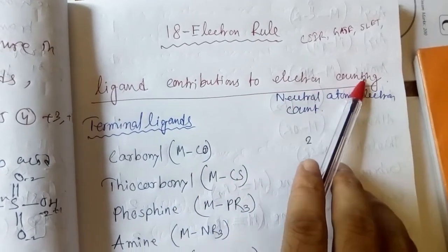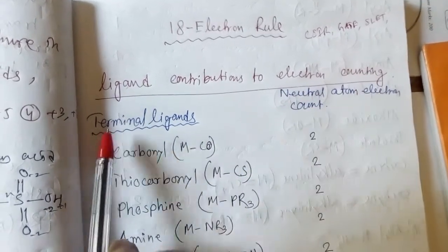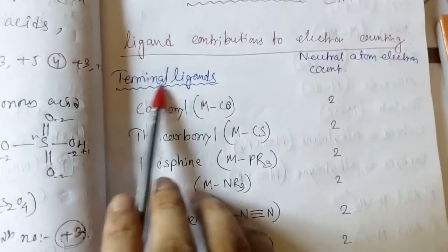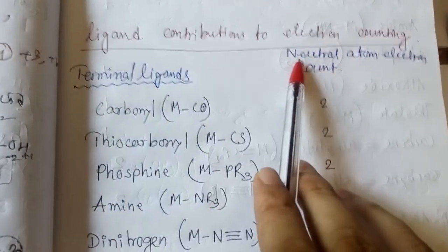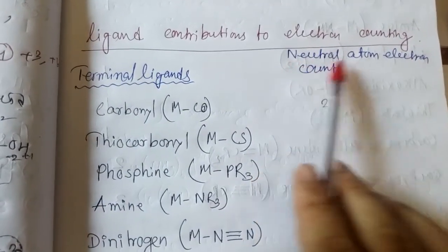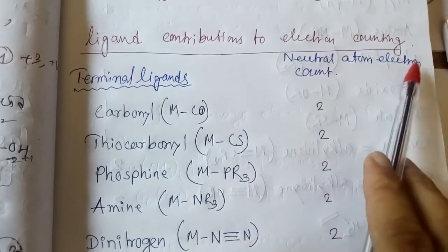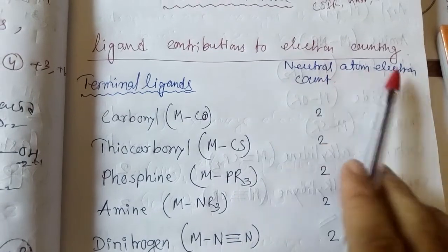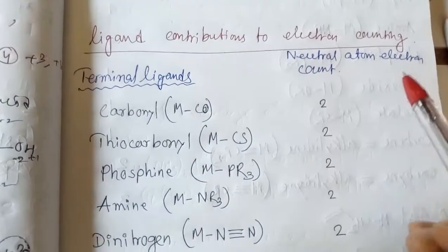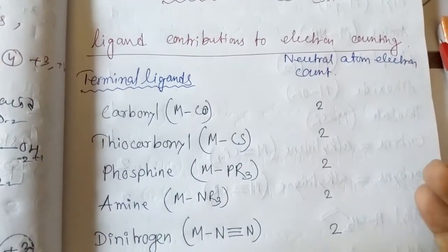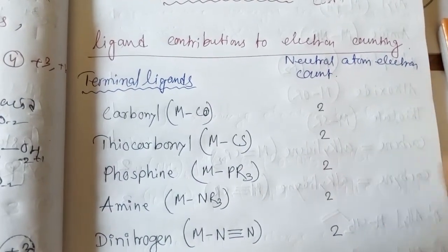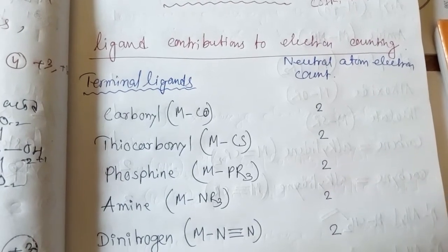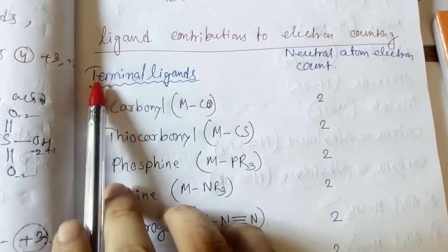First of all, we have terminal ligands and neutral atom electron counts. The neutral atom electron count method is very easy. The oxidation method is a little tough. Now let's see the terminal ligands.